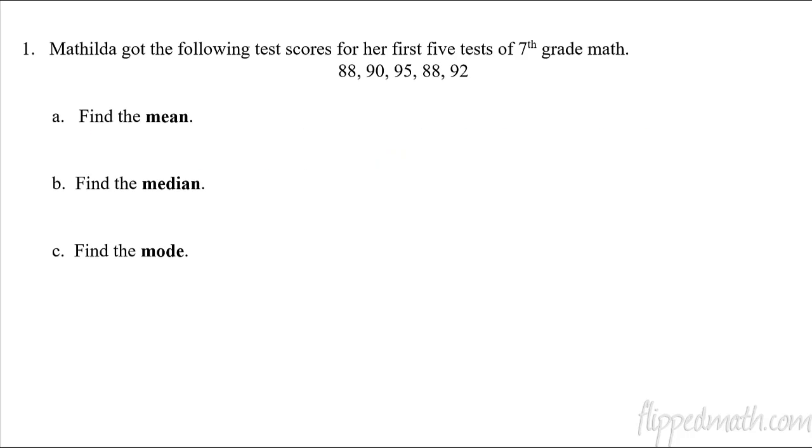All right, so here's our example. We go to this problem here that's below and we have this girl named Matilda, or Mathilda. I have three daughters and I missed the opportunity of naming one of them this. That would have been awesome. So now we've got these following test scores. Matilda got the following test scores on her first five tests in seventh grade math class: 88, 90, 95, 88, 92. That's really good. Good job, Matilda.